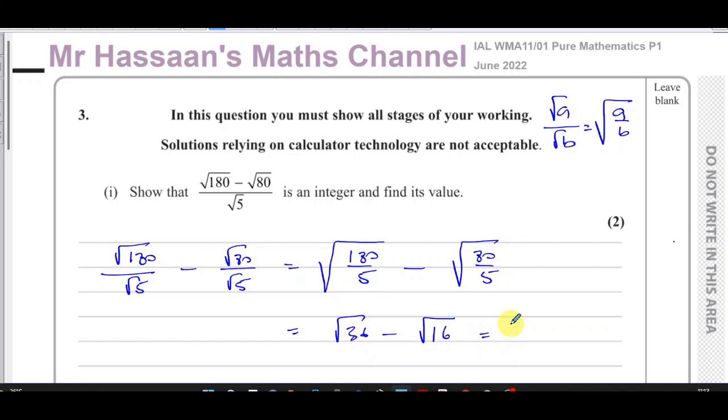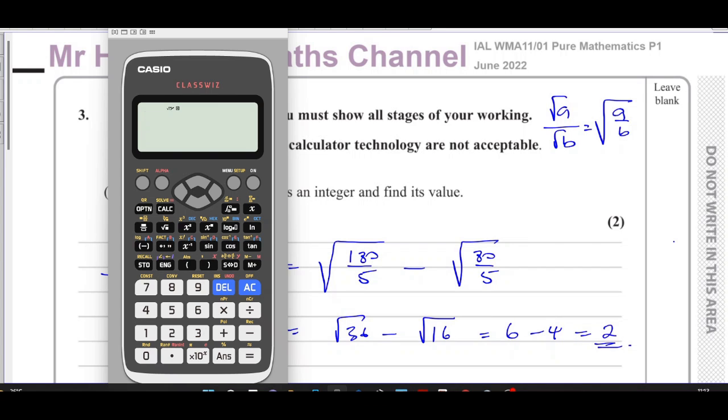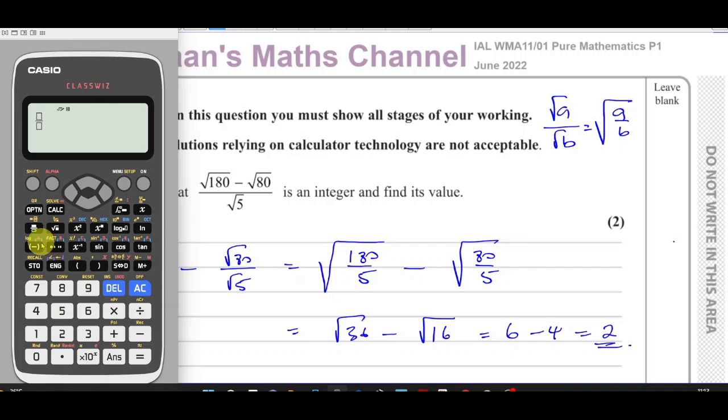And we know that the square root of 36 is 6, and the square root of 16 is 4, so you end up with 6 minus 4, which is 2. So there's the answer to that question. Now what we could have done is we can check to see if our answer is correct. So we could take the original question and see if we get the same answer. So we could do the square root of 180 minus the square root of 80 all over the square root of 5, and you see we get 2 as an answer. So we know that we're correct. So using the calculator is fine to check in case you've made a silly mistake in your working. Absolutely no problem with that, but the steps here must be shown.